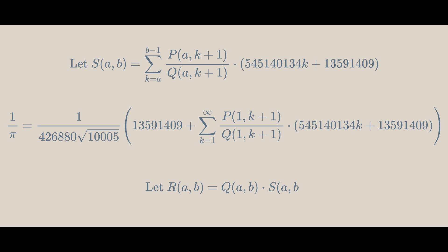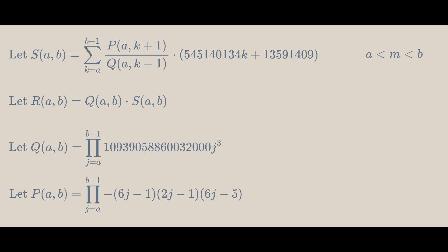We can replace the products in the sum with P and Q of 1 and k plus 1. Now, let's define S to be this sum from k equals a up to b minus 1. And note that P and Q's first argument is a instead of 1. Now, let's define R to be Q times S.